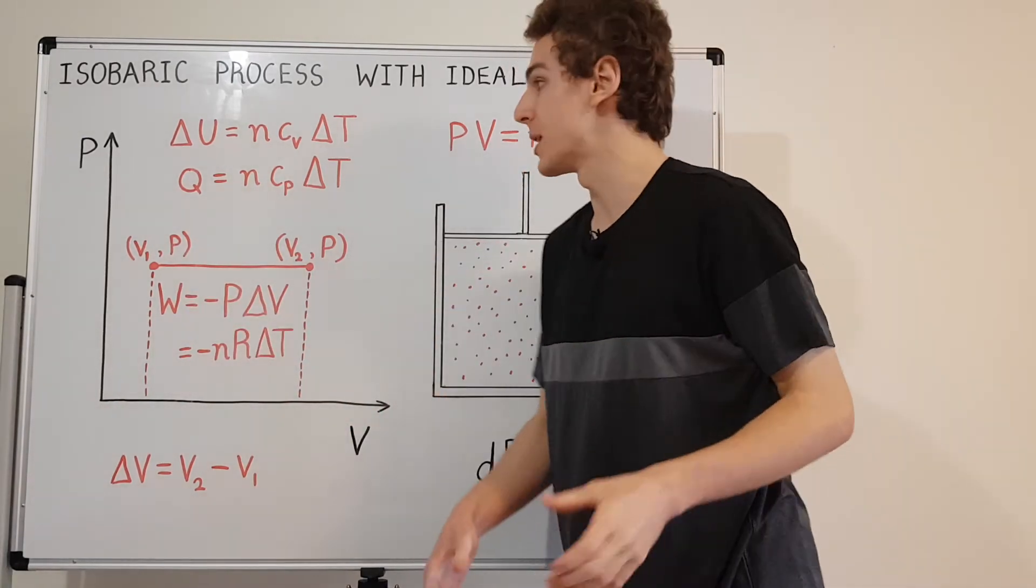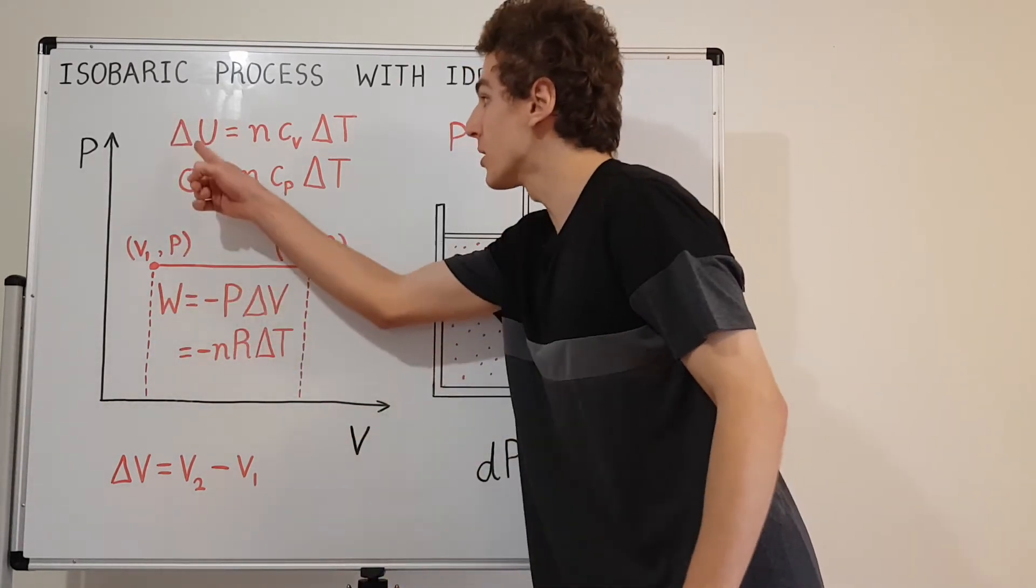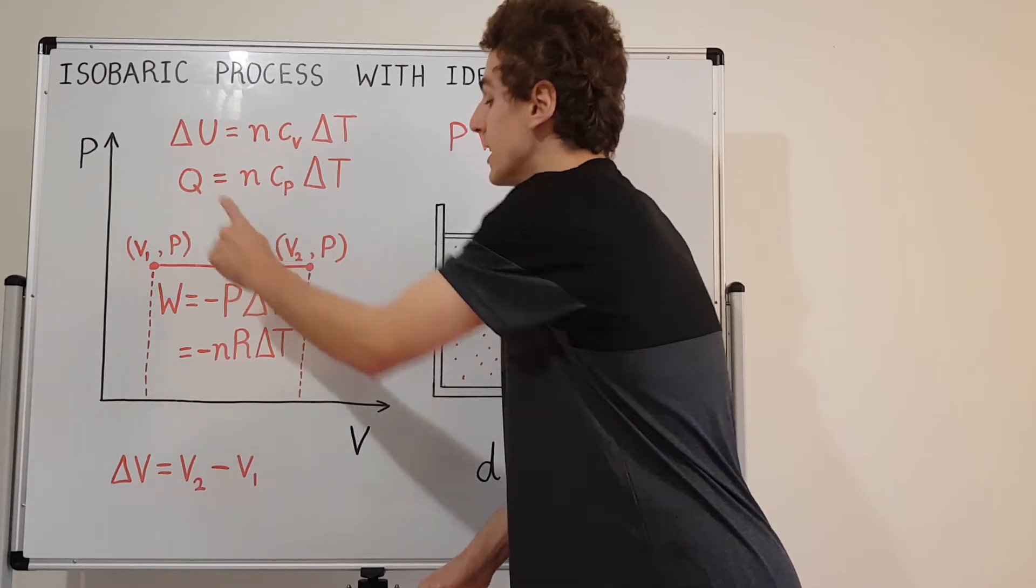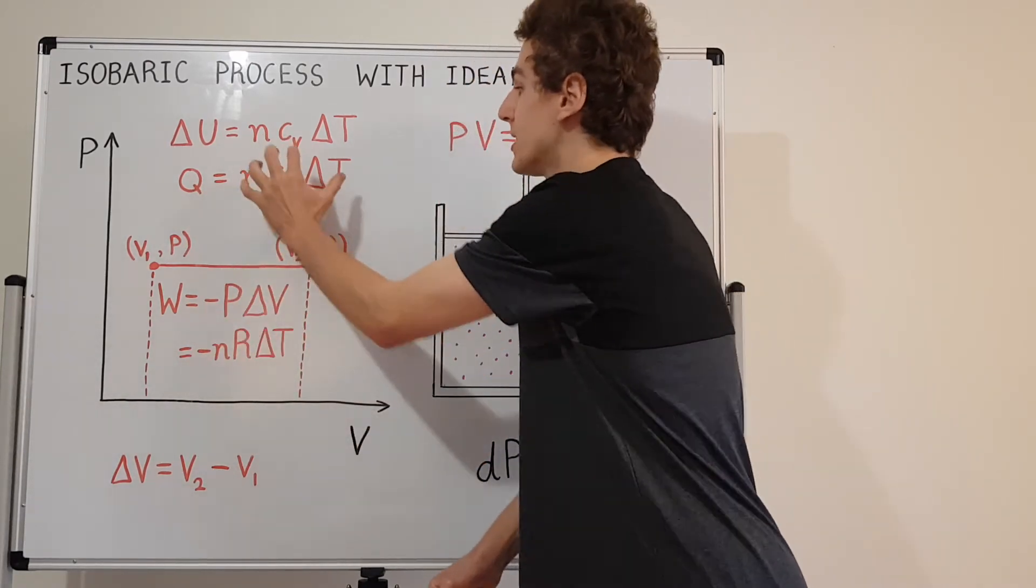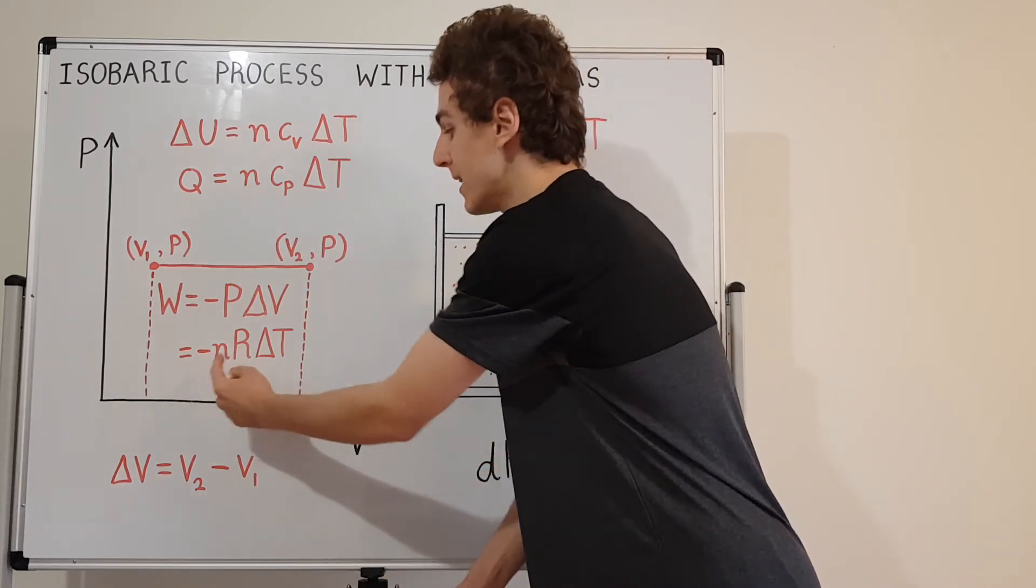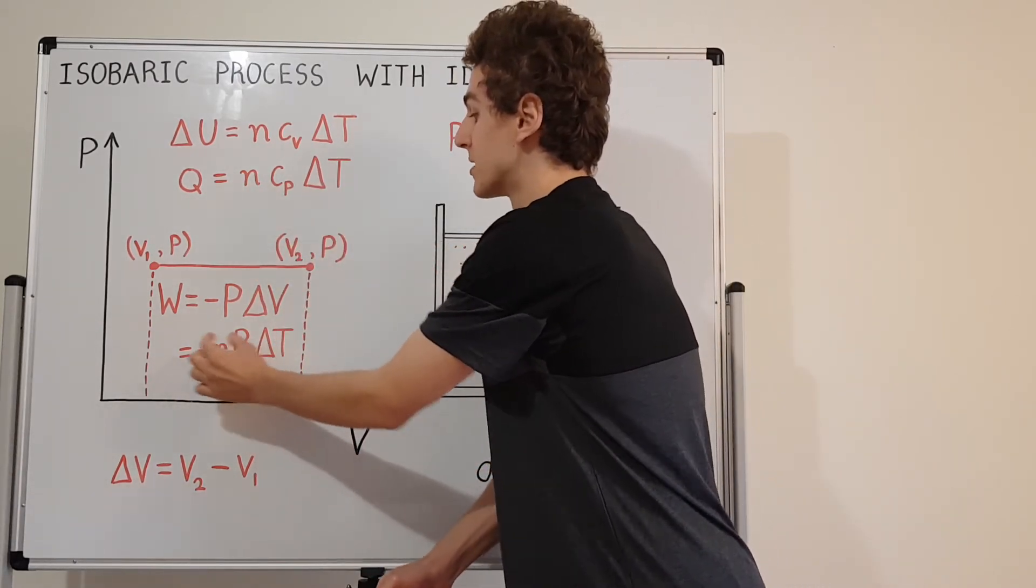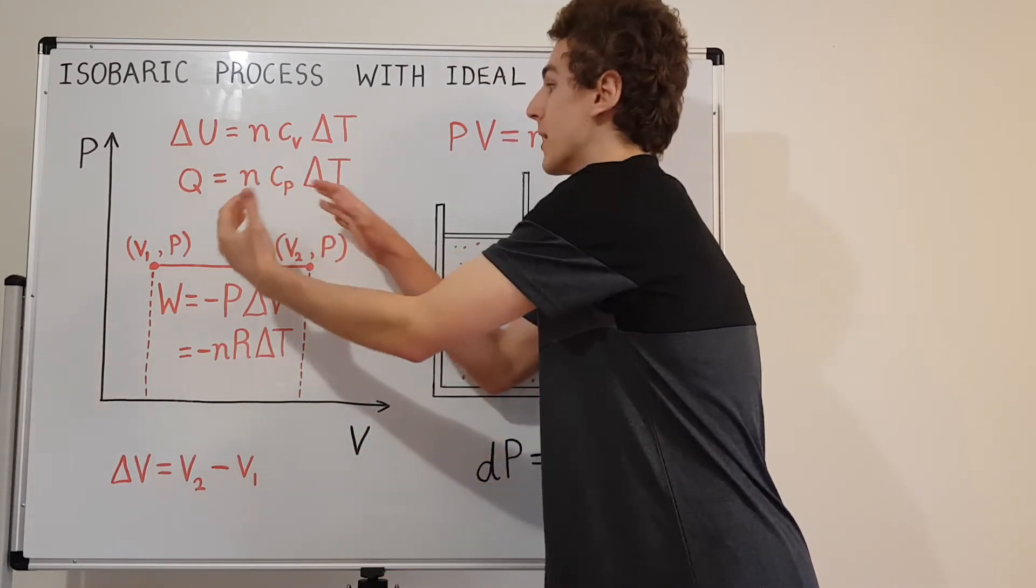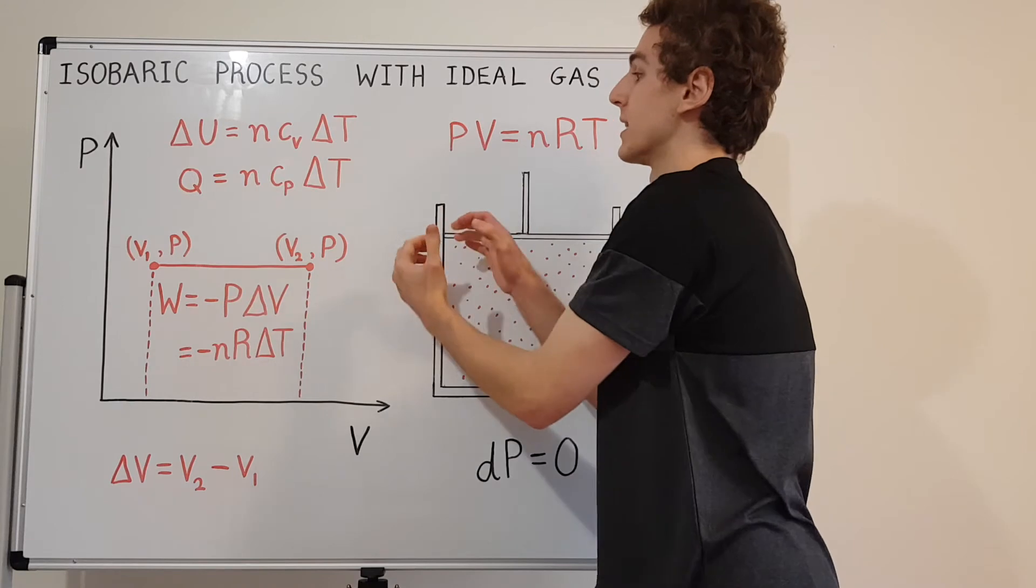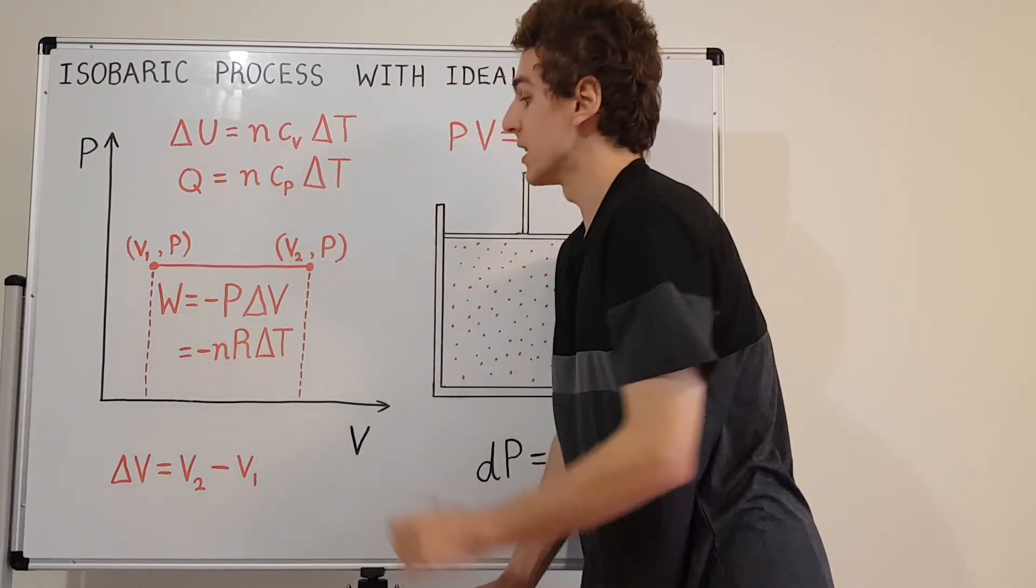So now let's use the first law of thermodynamics, which states that this guy is the sum of Q and W. So the only way you can change the internal energy is through heat or work. Let's add up this expression and this expression. You can see there's an n and a delta T in both of these guys. So you can actually factor out this R and you can factor out the Cp and you can factor out a n delta T.